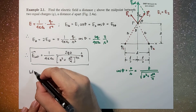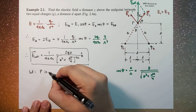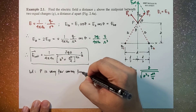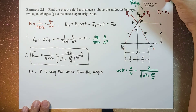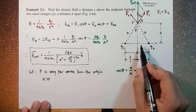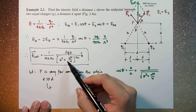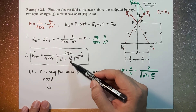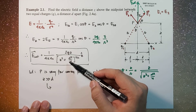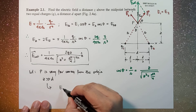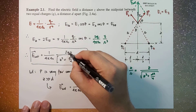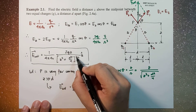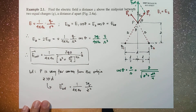Now let's consider the case where point P is very far away from the origin — meaning z is much much greater than the distance between q1 and q2. If that's the case, the d²/4 term becomes negligible and can be dropped, so (z² + d²/4)^(3/2) simplifies to z³. The z in the numerator divided by z³ gives z², so the net electric field becomes (1/4πε₀) · (2q/z²) · z-hat.